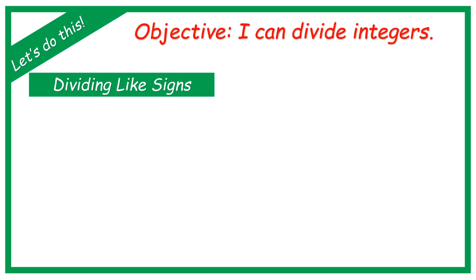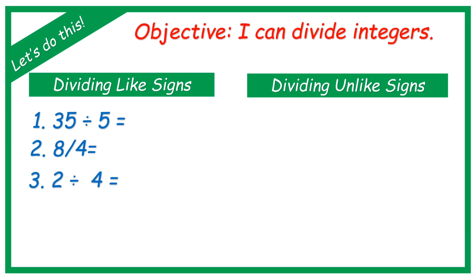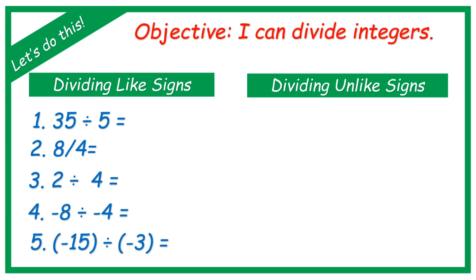First, we're going to divide like signs and also divide unlike signs. Let's have examples. 35 divided by 5, 8 divided by 4, 2 divided by 4, negative 8 divided by negative 4, negative 15 divided by negative 3. If you notice, all of these examples have like signs — the same signs. The first three are positive, and the last two have negative signs.